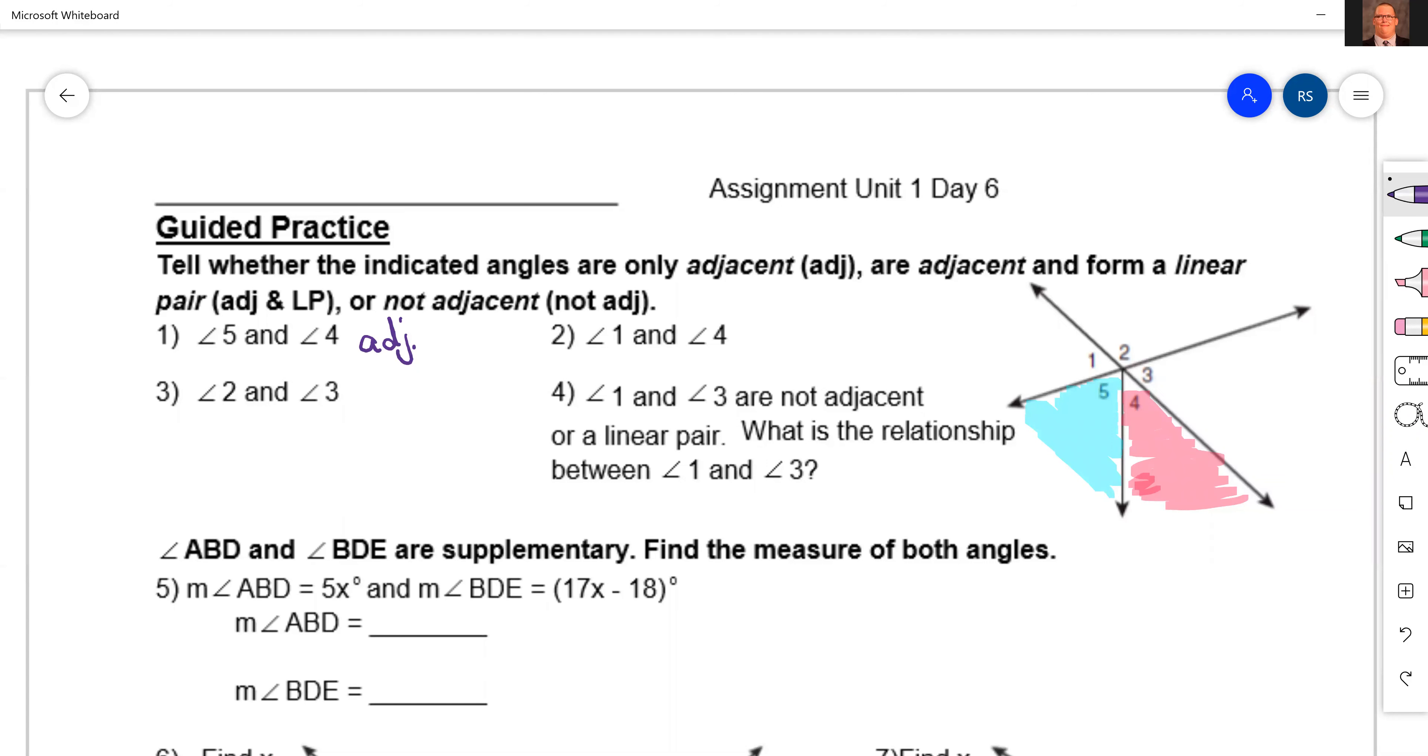Number two asks us about one and four. So one and four. Now you have to think about those. Yeah, they don't share a side, so since they don't share a side, we're going to say not adjacent.